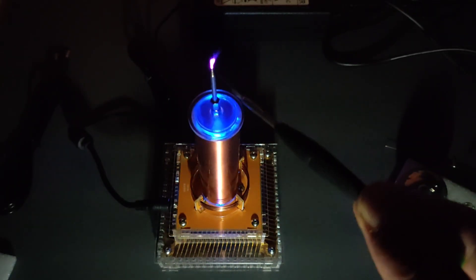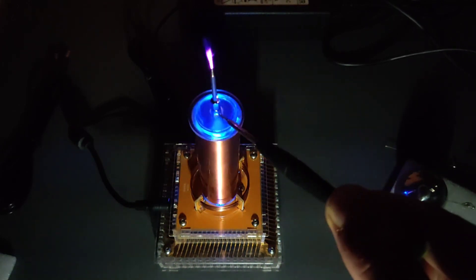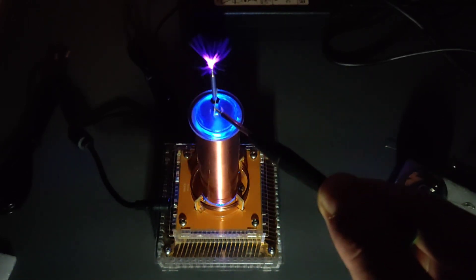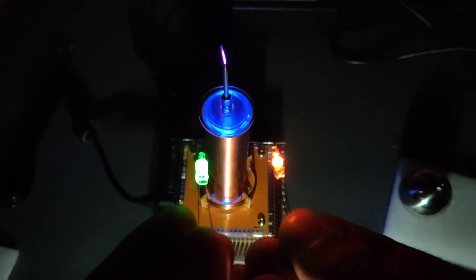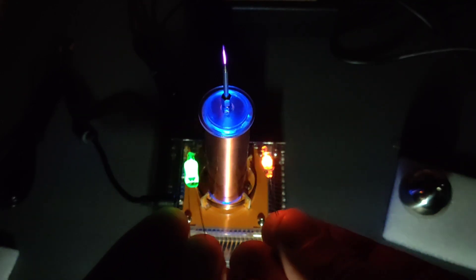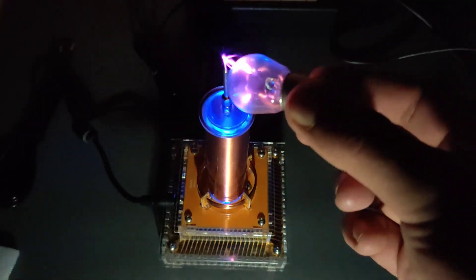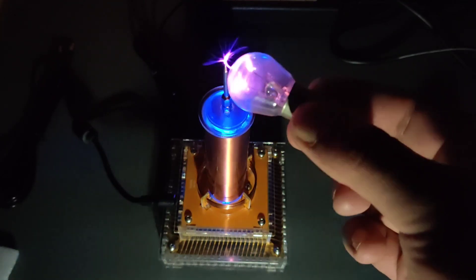Now in dim light you can see amazing arcs being generated. Also you can see neon bulbs glow by wireless transfer of power, and this small DC bulb can generate plasma arcs inside.